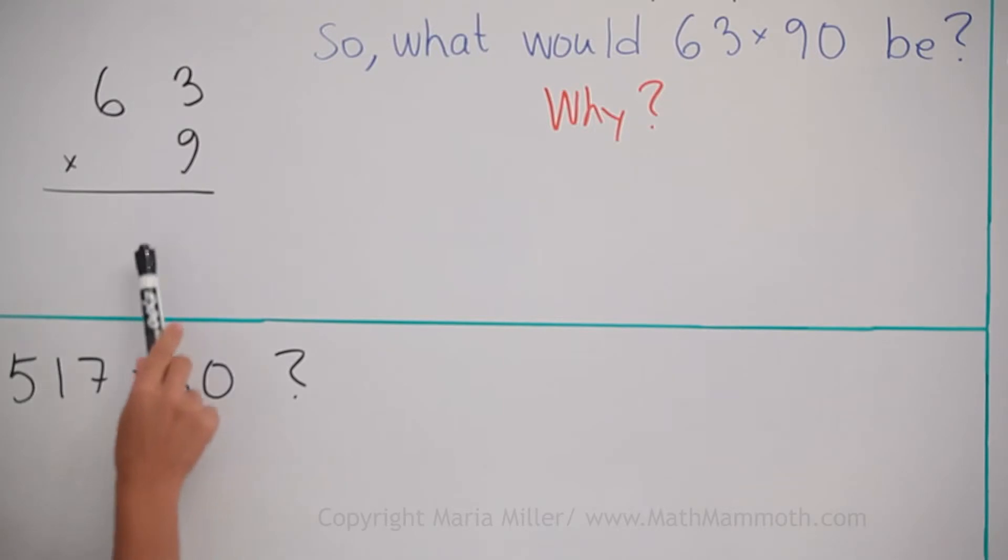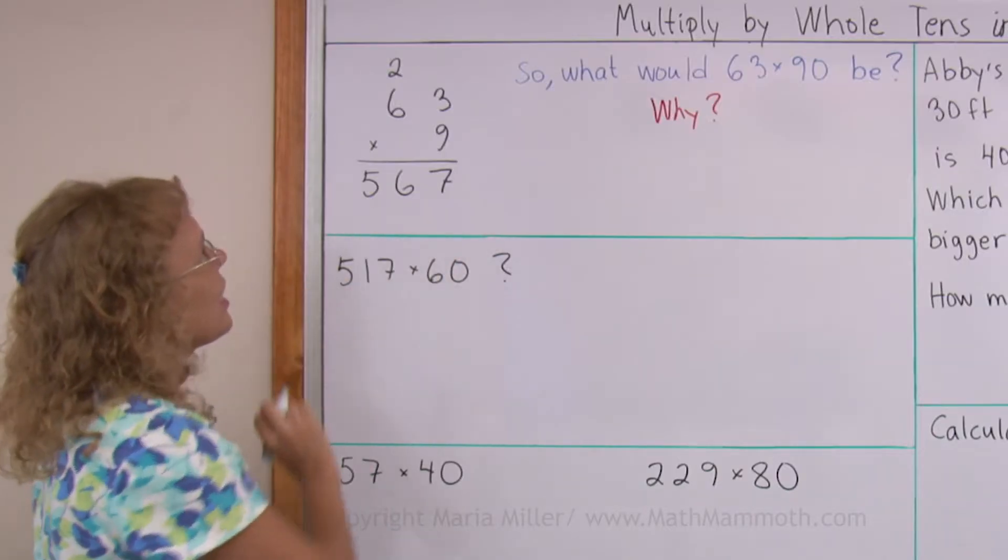First, I'm going to solve this, 63 times 9. So we go 9 times 3 equals 27, 7 here, 2 tens are regrouped, and then 9 times 6 plus 2. So we have 54 plus 2, 56. Okay, so that is 567.